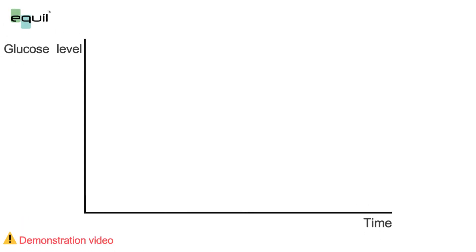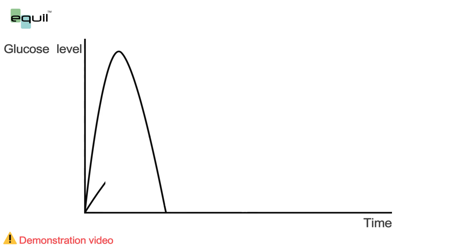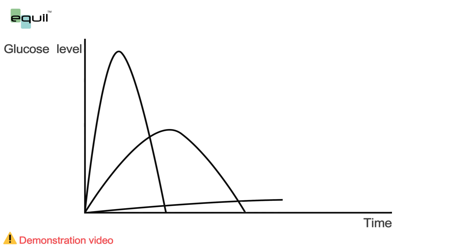In the case of carbohydrates, the level of glucose in the blood increases rapidly, but it does not last for a prolonged period of time. Proteins are less effective than carbohydrates at raising glucose levels, but their effects last longer. Fats don't significantly raise blood sugar levels, but their effect remains in the blood for a longer period than most other foods.